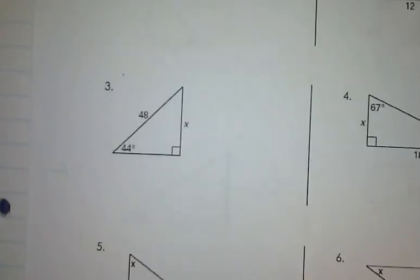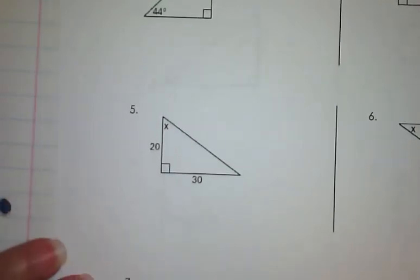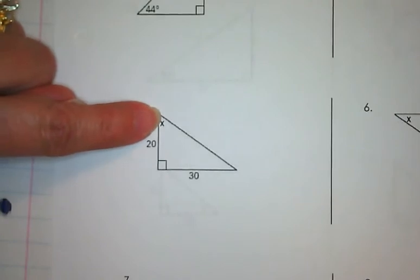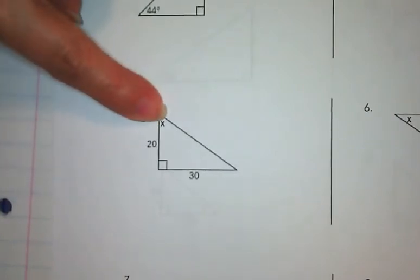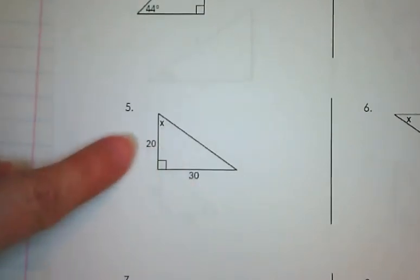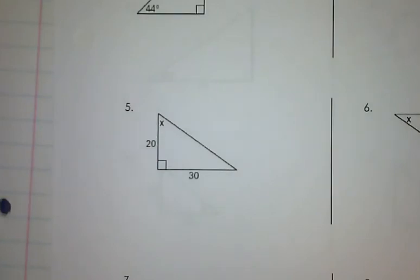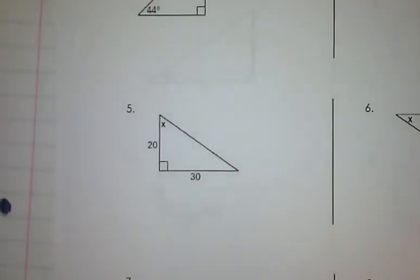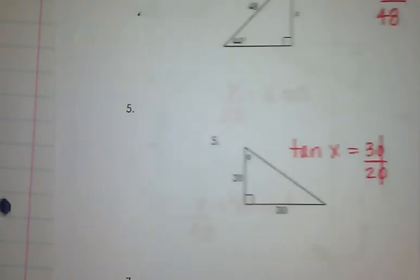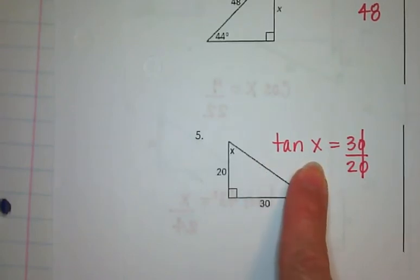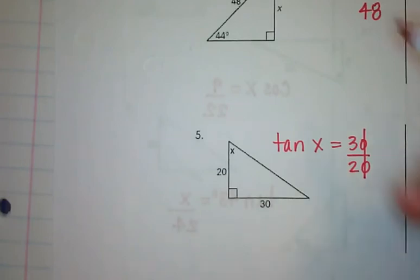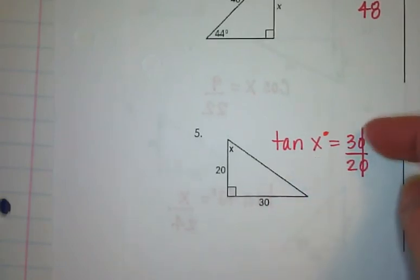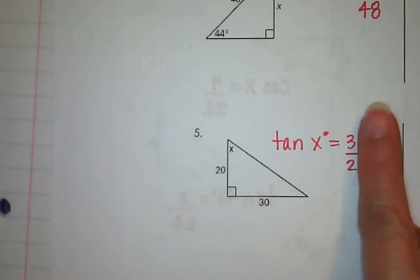Moving to number 5: this time we don't know the angle measurement — x is the angle we're looking for. From this angle, we know both the opposite side and the adjacent side. The trig function that relates an angle to the opposite and adjacent sides is tangent. So the tangent of angle x equals the opposite over the adjacent. We can simplify: 30 over 20 is the same as 3 over 2.